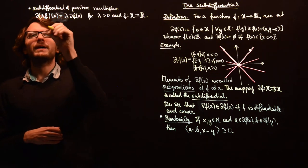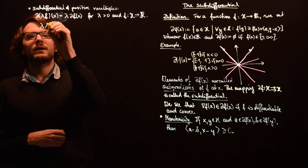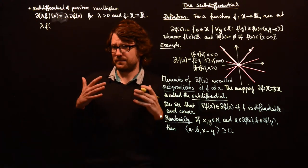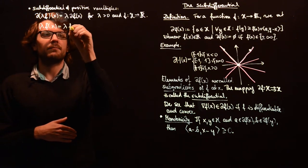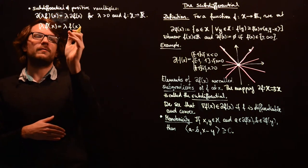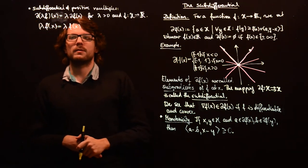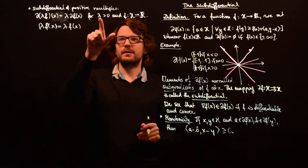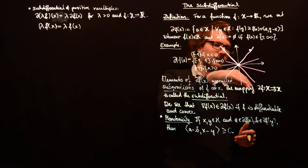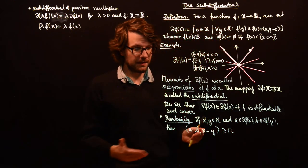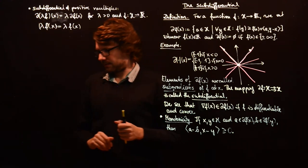Lambda f of x means multiplying all function values of f by lambda to obtain a new function. The factor must be positive to preserve convexity. For instance, if you had minus the absolute value function, the subdifferential would be empty everywhere, which would contradict this property for negative lambda.